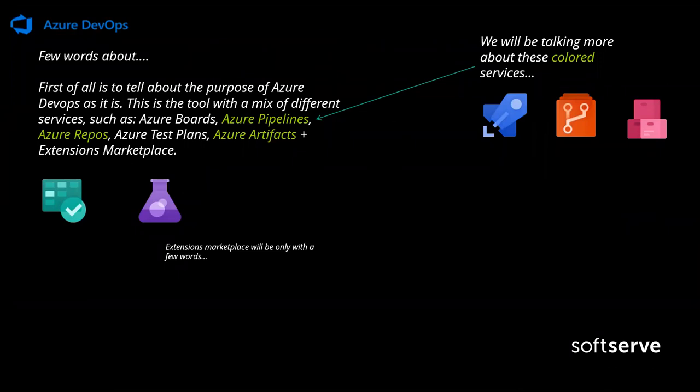A few words about Azure DevOps itself. Azure DevOps is basically a continuous integration and continuous deployment resource which is used across many projects. It combines a few tools to manage projects, tasks, scopes, creating build pipelines, deployment pipelines, and also testing resources. So it includes a testing management system. In our presentation, we're going to talk about Azure Pipelines, Azure Repositories, and Azure Artifacts.